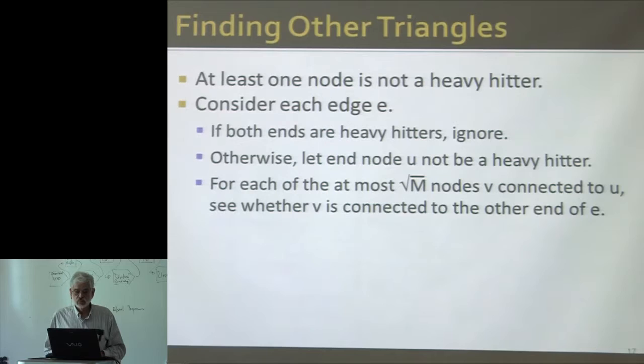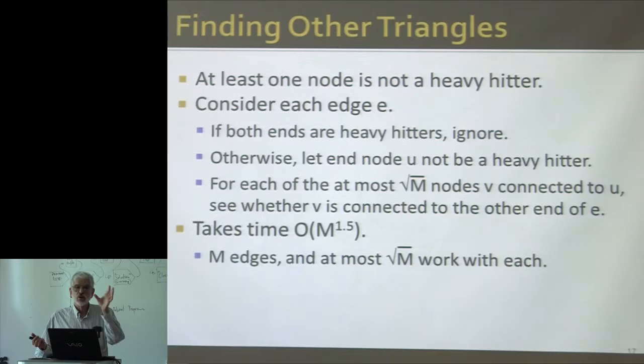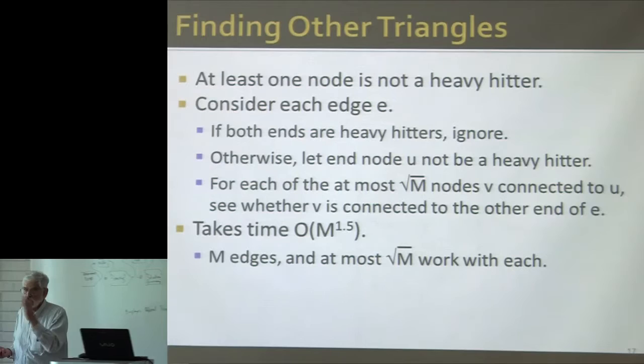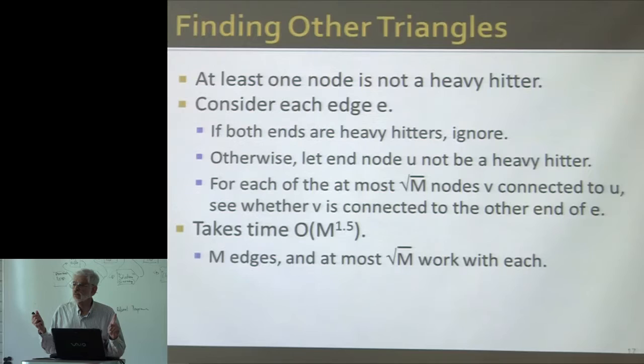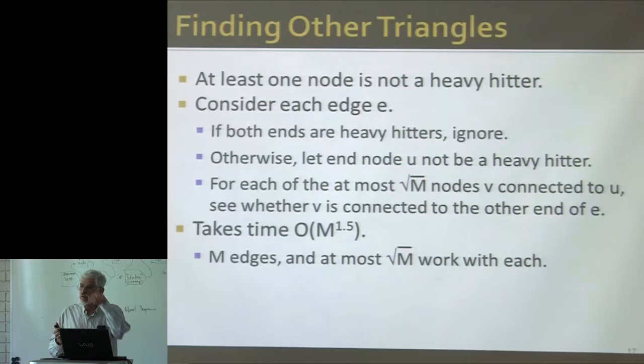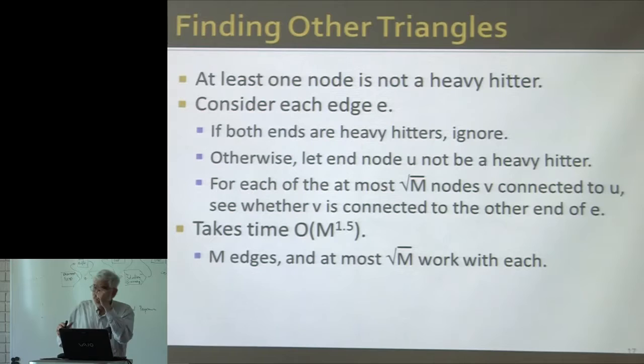That's another m to the 1.5 — there are m edges, and it takes order square root of m time per edge. Why do we ignore cases where both ends are heavy hitters? Because we've already found all the heavy hitter triangles. But if the third node is not a heavy hitter, we'll catch that when we consider one of the other edges. If a triangle has at least one node that isn't a heavy hitter, then it has at least two edges with non-heavy hitter ends, so we'll catch it.